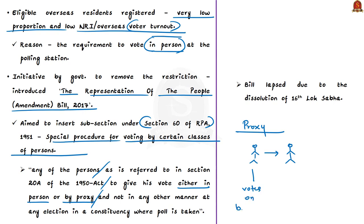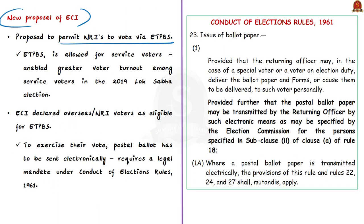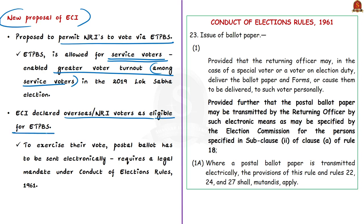The bill lapsed because of the dissolution of the 16th Lok Sabha. In furtherance of this move to increase overseas voter registration and turnout, the Election Commission of India has proposed to permit non-resident Indians to vote through the electronically transmitted postal ballot system, which we discussed on 16th December. Already the electronically transmitted postal ballot system is allowed for service voters, and because of this we were able to see greater voter turnout among service voters in the 2019 Lok Sabha election. The Election Commission of India has declared overseas or non-resident Indians as eligible for this system.